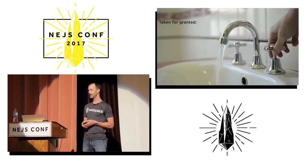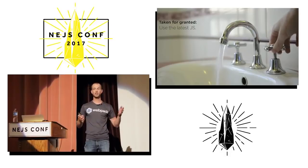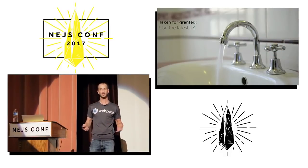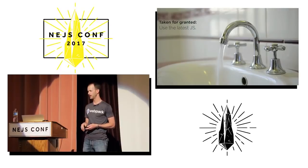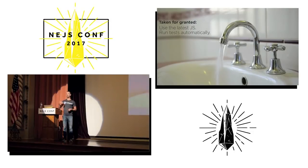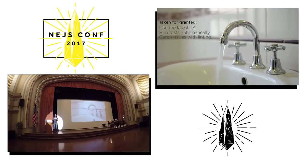On my team there's a long list of things we just don't think about anymore. My team knows they can use the latest version of JavaScript and it will just magically get transpiled — they don't have to think about it. They know that every time they hit save the tests will run automatically, and when we push code it will run on the CI server and we'll know if any tests have failed.